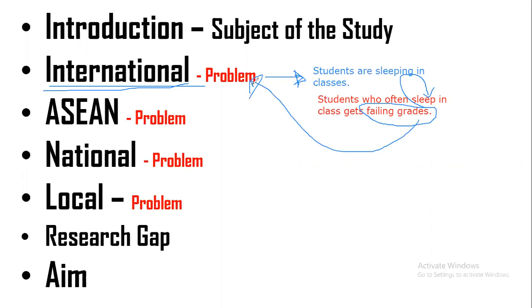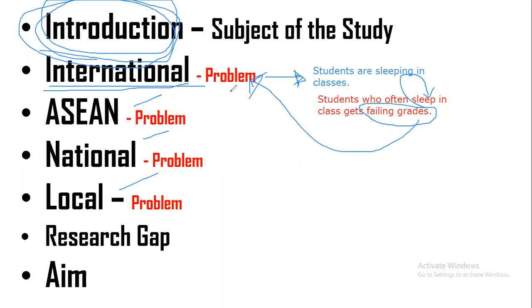Do not put in the international, ASEAN, national, and local sections any factual information that is not a problem. If you are just putting factual information, you are creating an introduction — not the problem section. The same goes for the ASEAN section. For example, look for a problem in Malaysia related to your topic, such as stress.